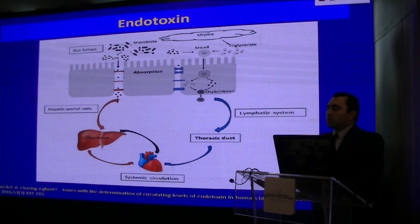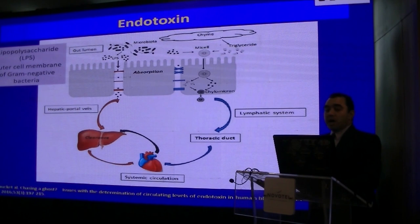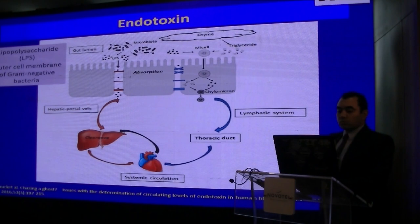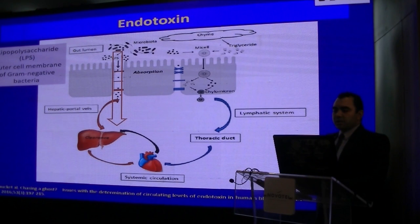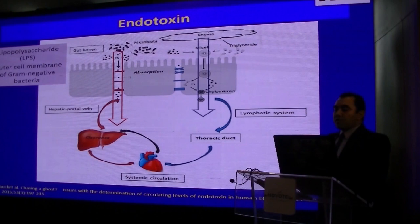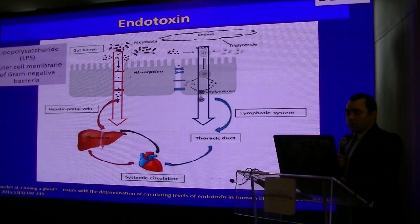Endotoxins are the lipopolysaccharide part of the outer layer of the cell walls of gram-negative bacteria. We as human beings host a huge number of gram-negative bacteria in our gastrointestinal tract. These bacteria and their toxic products, including endotoxins, can cross the intestinal barrier through a paracellular approach to pass into the portal circulation to be cleared by the liver. There is another way they can cross through the intracellular way, passing through the lymph to the thoracic ducts and then to the systemic circulation, potentially inducing an inflammatory response.